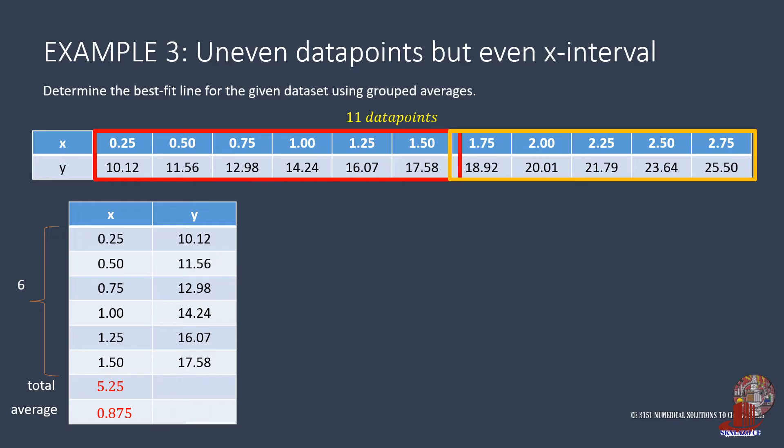The total of y is taken from 10.12, 11.56, add 12.98, plus 14.24, with 16.07, and 17.58, which is equal to 82.55. Divide this by 6 to get 1651 over 120.